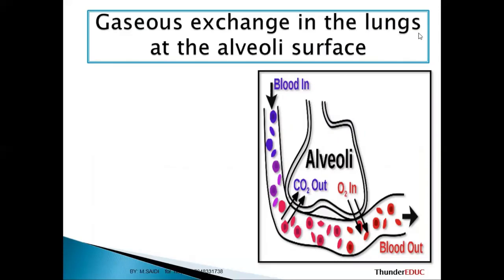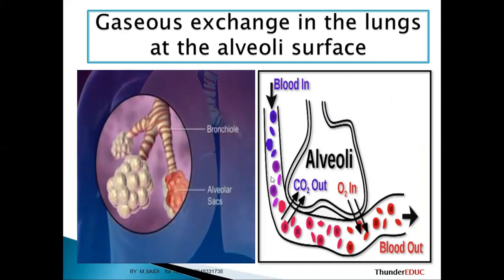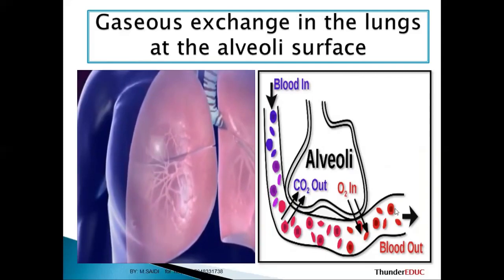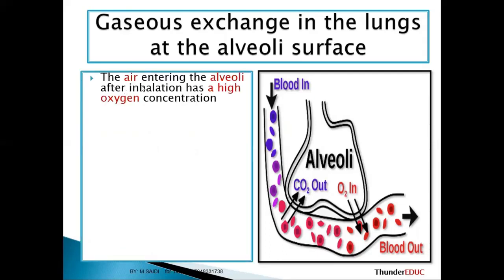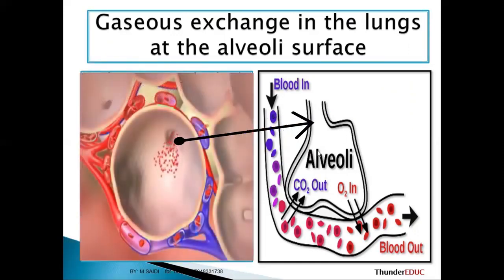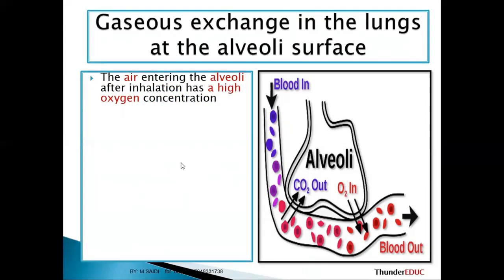Gaseous exchange takes place in the lungs at the alveoli. The blood comes in with no oxygen and a little carbon dioxide. When it reaches the alveolus, gaseous exchange takes place, and by the time it leaves, the blood has enough oxygen. The air entering the alveoli after inhalation has a high concentration of oxygen.